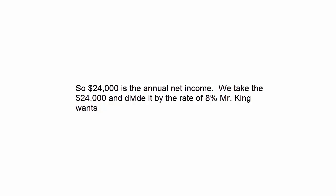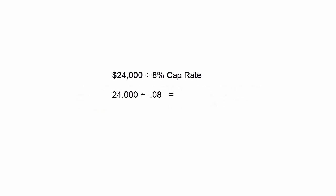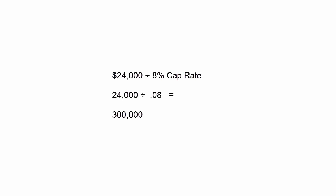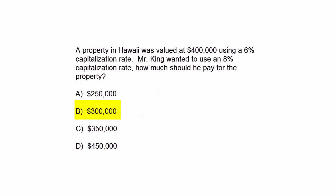Now we're going to take the $24,000 and divide it by the capitalization rate of 8% that Mr. King wants — giving us $300,000 for that property using the 8% capitalization rate.